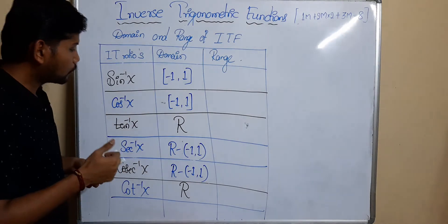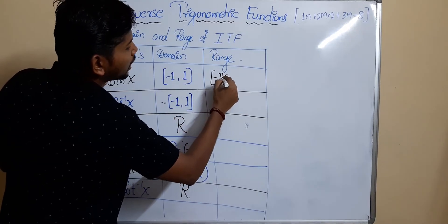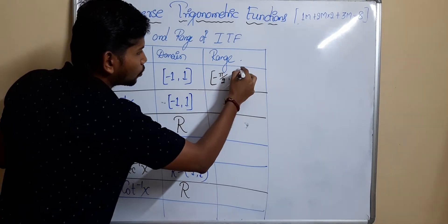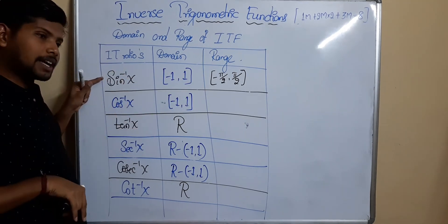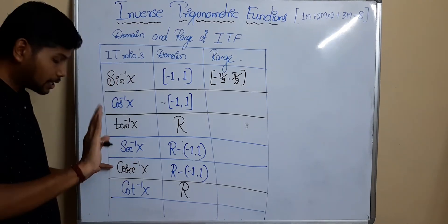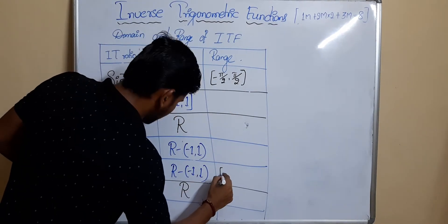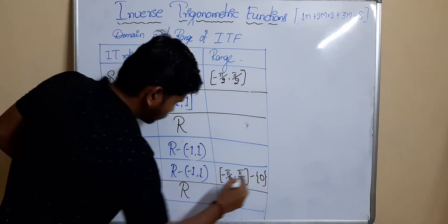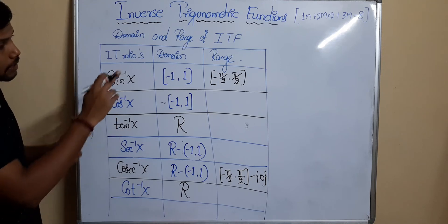Now we need to discuss the ranges. The range of sin⁻¹(x) is [-π/2, +π/2] — a closed interval. The reciprocal of sin(x) is cosec(x), so in the same manner, the range of cosec⁻¹(x) will be [-π/2, π/2] excluding 0, because cosec(0) is indeterminate.